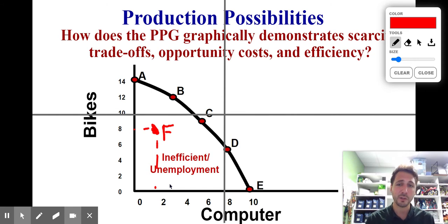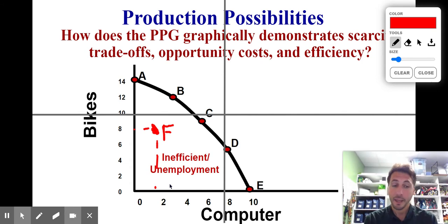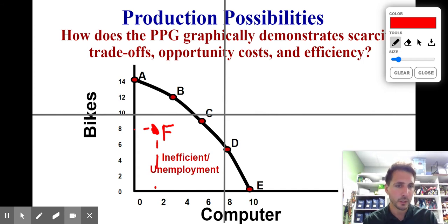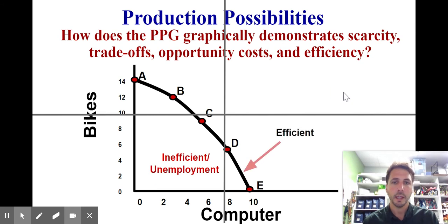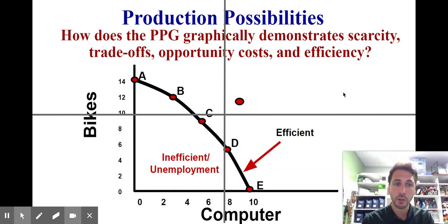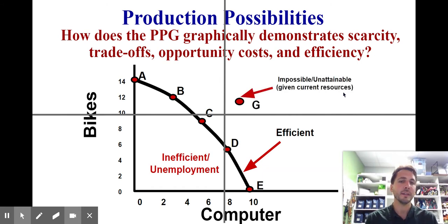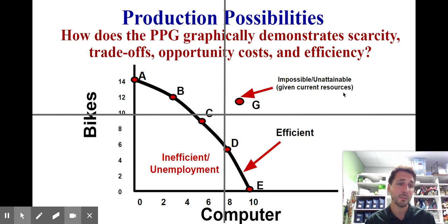Any point inside of the curve is considered inefficient and we call that unemployment. Right now you know something about our current unemployment rate in the United States — it's not good. So where are we on our production possibilities curve? We are certainly inside of the curve — this is called a market failure. We're not producing what we actually should be producing. And anything on the curve is efficient. What about a point outside the curve? We call that unattainable. Given our current resources, we cannot attain that point — we cannot produce that combination. We just don't have enough resources to do it.